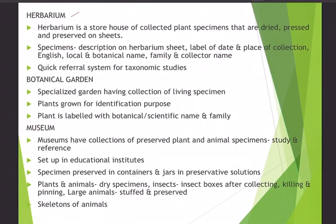Specimens are gathered, stored, and preserved with information for future studies. The main taxonomical aids are: herbarium, botanical garden, museum, and zoological park. A herbarium is a storehouse of collected plant specimens that are dried, pressed, and preserved on sheets. You can make one by collecting various leaves, pressing them between notebook pages, letting them dry under a weight, then stitching the dry leaves and writing their characteristics.